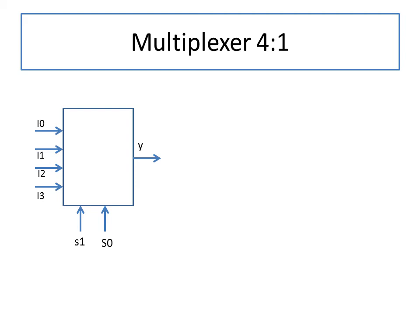Let us take one more example: a 4-to-1 multiplexer. A multiplexer is a combinational circuit that accepts many inputs and allows only one to reach the output. This design has four inputs I0 to I3, two select lines S1 and S0 (which decide which input line is connected to the output), and a single output Y.